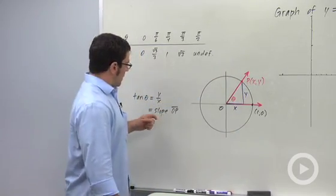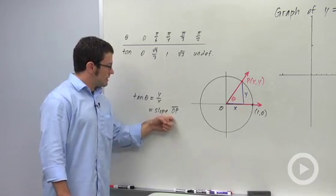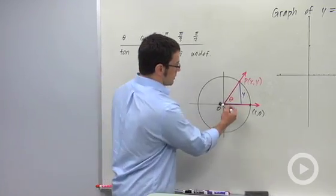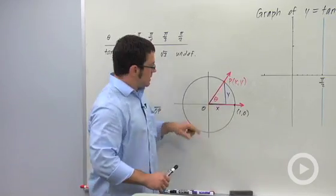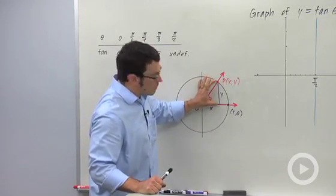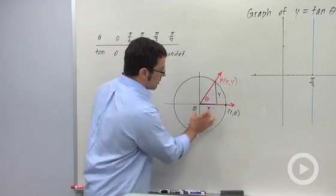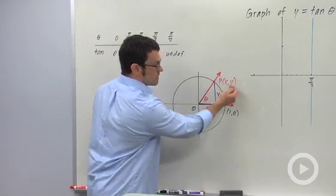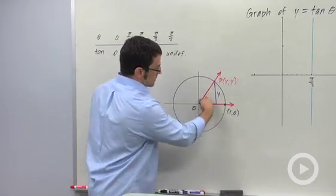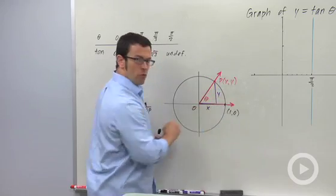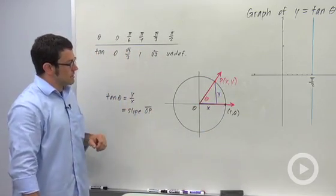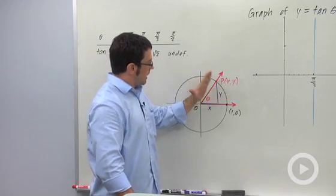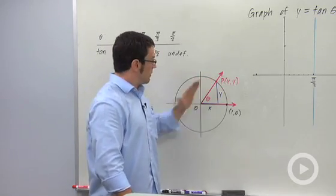I want to remind you that another way to see the tangent function is as the slope of the terminal side OP. Why is that? Well, if you draw this little triangle here, the vertical leg of the triangle is Y, and the horizontal leg is X, where X and Y are these coordinates. And the slope of this line would be Y over X, rise over run. So Y over X is the slope of OP, and that helps us see how tangent behaves. Tangent gives me the slope of this line.